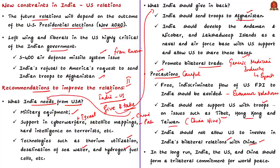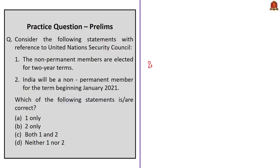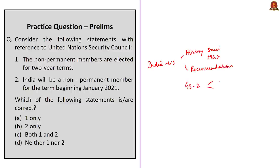The author concludes that in the long run, India, the US, and China should form a trilateral commitment for world peace, provided current Chinese international policies undergo a healthy change. To summarize, we have seen the history of India-US relations since India's independence and the recommendations given by the author to improve present India-US ties. This discussion will be very helpful to write answers in General Studies Paper 2 on questions related to India-US ties or the policy of the US towards India's interests. Now have a look at this practice question.